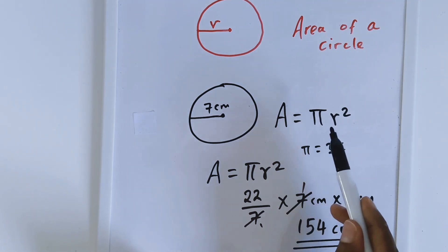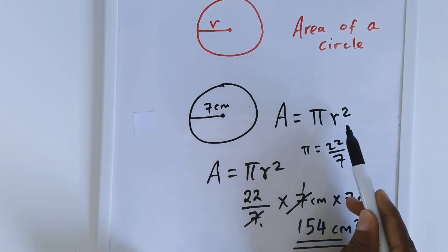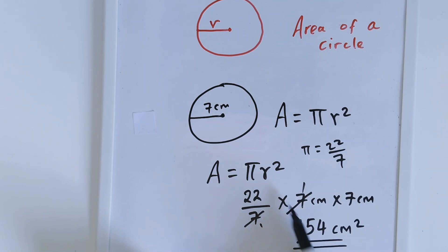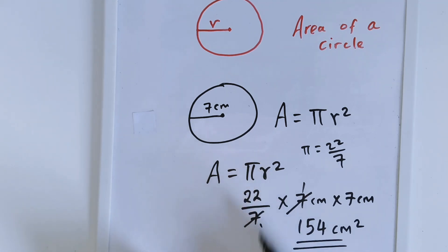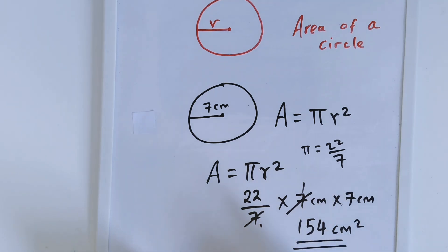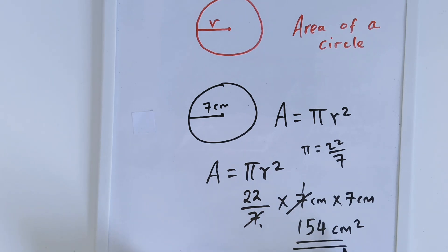Remember the formula: pi r squared. R is 7 in this case. So you put the value for r into the formula, and because it is squared, you have to multiply it by itself again. That gives you 154 cm squared.